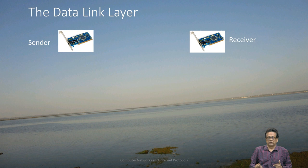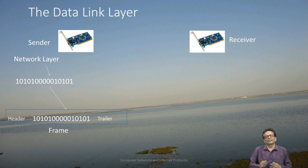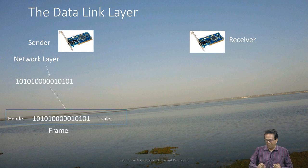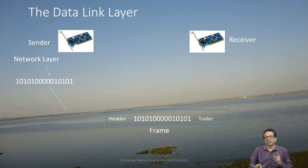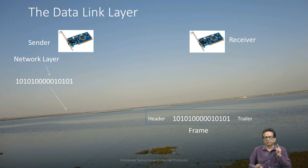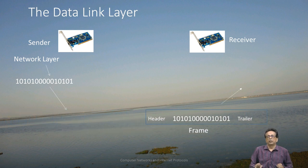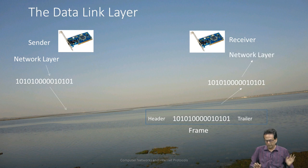What is the job of the data link layer? The data link layer and the physical layer both reside on the network interface card. The data link layer receives data from the higher layer — the network layer — and constructs something called a frame out of that data. It adds a header and a trailer. Once this is done, it is called a frame. That frame is then converted into signals and sent to the other end by the physical layer. The receiver's data link layer receives the frame, and from that frame, the content is delivered back up to the network layer.